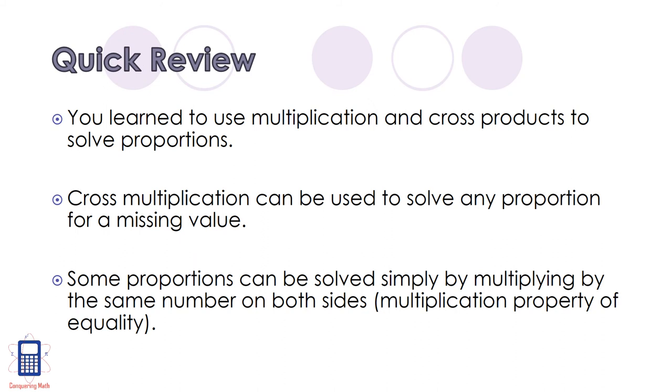Let's wrap up with a quick review of what we learned today. You learned to use multiplication and cross products to solve proportions. Cross multiplication can be used to solve any proportion for a missing value. But some proportions can actually be solved easier by just multiplying by the same number on both sides, which is also known as the multiplication property of equality.